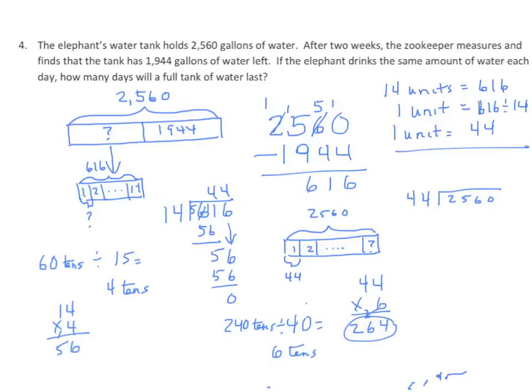So I'm going to do 44 times 5 and I get 220. We'll subtract 220 and I get 36. 36 tens — I trade them for 1s and I get 360 ones.